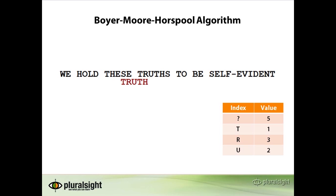With the t's aligned, we start comparing at the end of the word truth again. This time comparing the h in truth with the r in 'truths' — this is a mismatch. The r exists in the bad match table, so we look up the value, find the value 3, and slide everything forward 3 characters, aligning the r's. With the r's aligned, we now match the letter h, then t, u, r, and t. We've now used the Boyer-Moore Horspool algorithm to match the word truth in the phrase 'we hold these truths to be self-evident'.